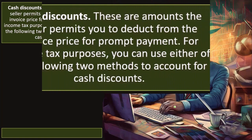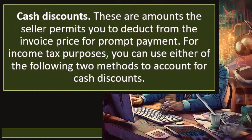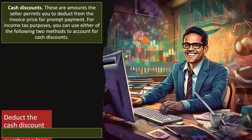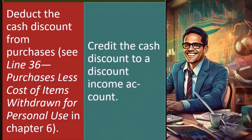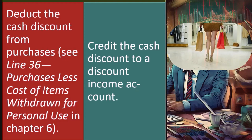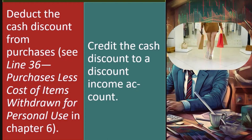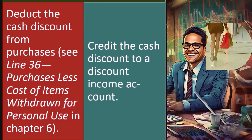Cash discounts are amounts the seller permits you to deduct from the invoice price for prompt payment. For income tax purposes, you can use either of two methods to account for cash discounts: deduct the cash discount from purchases — see line 36, purchases less cost of items withdrawn for personal use, in chapter six — or credit the cash discount to the discount income account. When you're purchasing something and you get a cash discount, often because you paid cash, it's a common arrangement with inventory purchases.